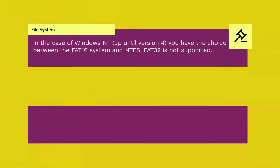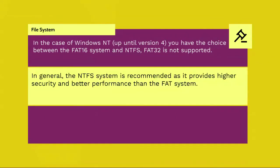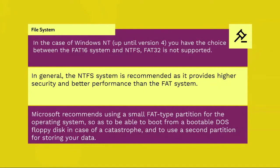In the case of Windows NT, you have the choice between FAT16 and NTFS. FAT32 is supported, but in general the NTFS system is recommended as it provides higher security and better performance than the FAT system. Microsoft actually recommends using a small FAT-type partition of between 200 to 500 MB for the operating system, so as to be able to boot from a bootable DOS floppy disk in case of a disaster, and to use a second partition for storing your data.